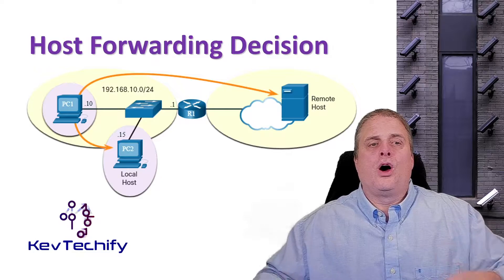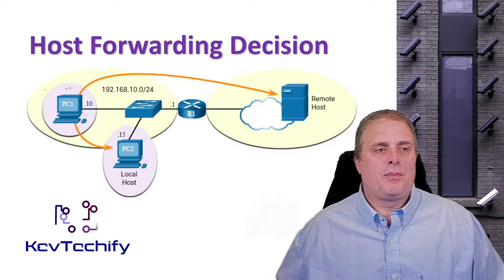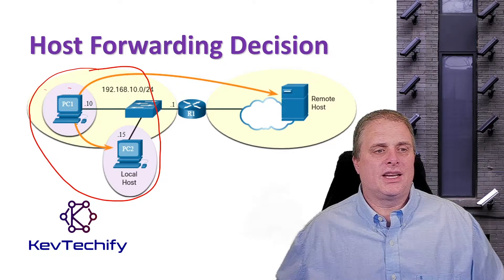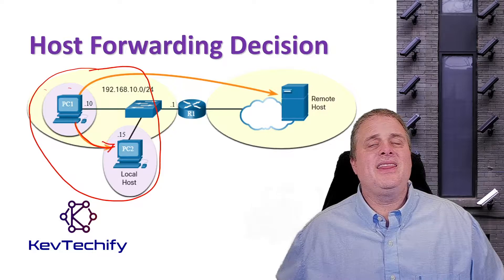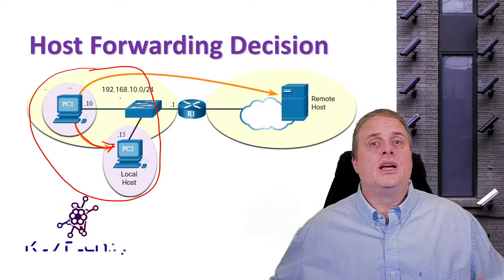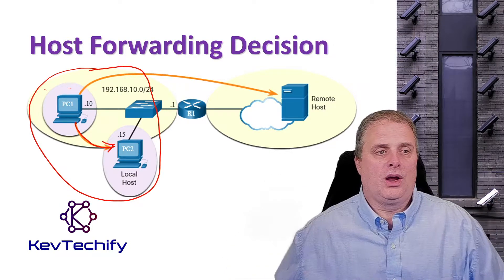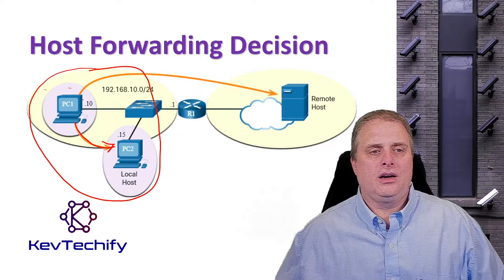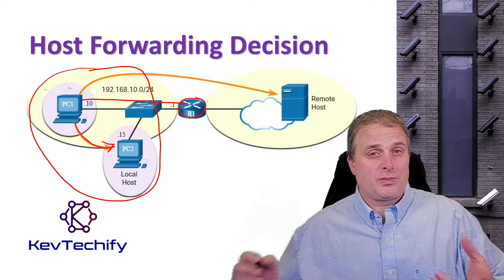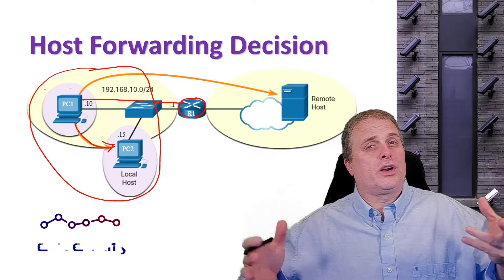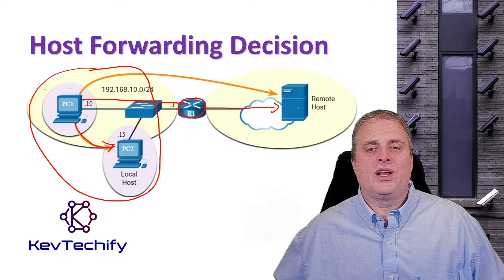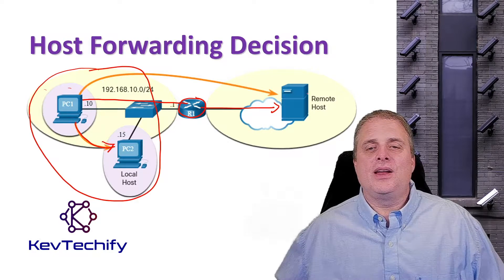You can send it to local hosts — hosts that are on the same network. PC1 can send data to PC2; it's on the same network. Or they can send it to remote hosts. A remote host is a destination that's on a different network. We have to go from PC1 through this router. A router routes between networks — it connects one network to another. So we're changing networks when we go through there to its destination. This is known as a remote host: if it's not on our network, it's a remote host.